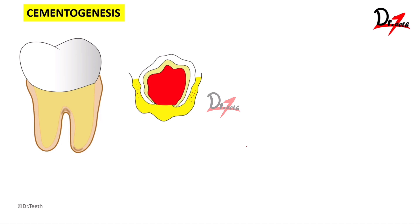Now let's understand the process of development of cementum, which falls into the category of cementogenesis. As stated, it is a mesenchymal tissue and it develops during the process of tooth formation.